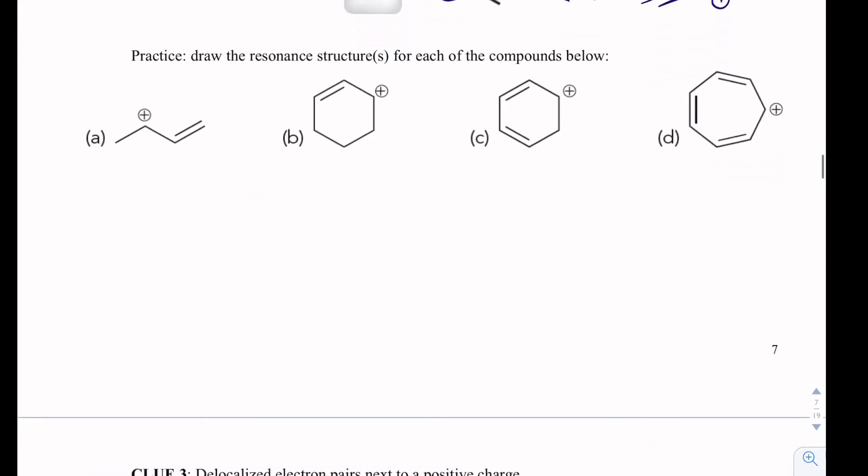In A, we have a positive charge, and then we have delocalized electrons in a double bond, so I'm going to move those towards the positive charge. I'm going to get something like this. I'm going to look at C next. I'm going to do the same thing. I did not touch this double bond, so that double bond will go there. We'll put a positive charge there.